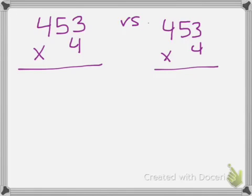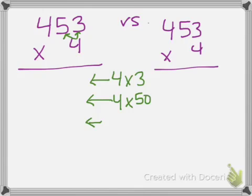We have been teaching them about partial products. So normally when we gave this problem, 453 times 4, we would have students draw three arrows and then they would show me that the first arrow is 4 times 3, the second arrow is not just 4 times 5, it's 4 times 50 because that is that value, and the last arrow would be 4 times 400.